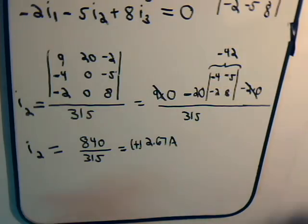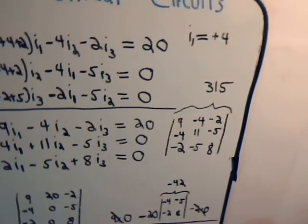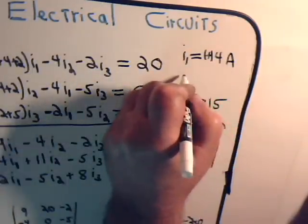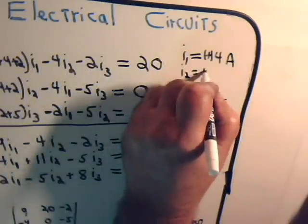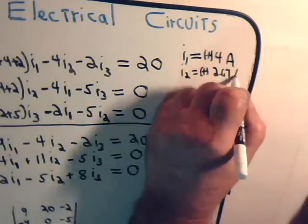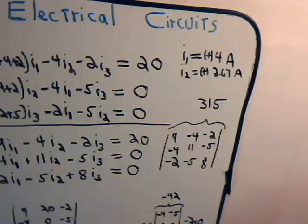And I think this comes out to be pretty close to plus 2.67 amps. So there is current I2. I2 is plus 2.67 amps. And only one more to go.